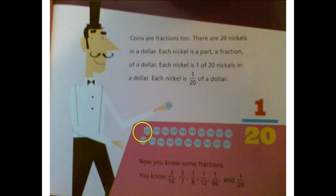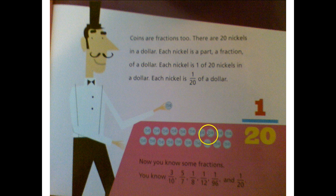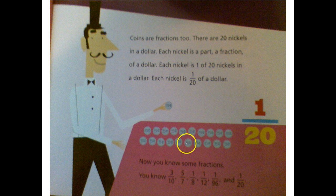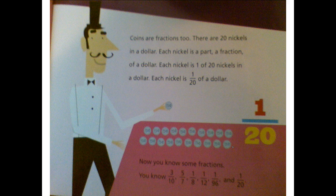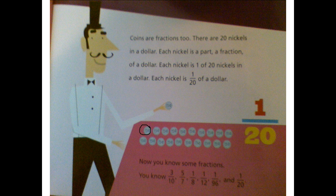If we skip count by fives, we can see: 5, 10, 15, 20, 25, 30, 35, 40, 45, 50, 55, 60, 65, 70, 75, 80, 85, 90, 95, 100. Twenty nickels makes one hundred cents or one dollar. One nickel would be one twentieth of a dollar.